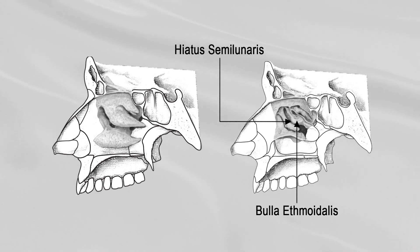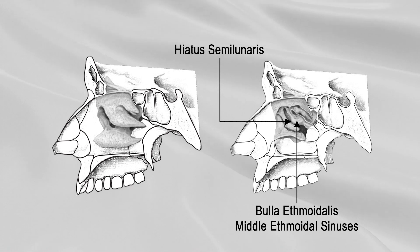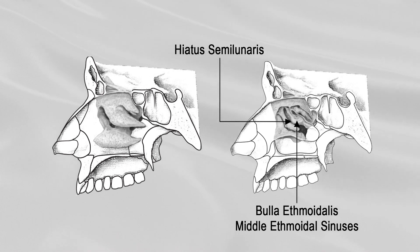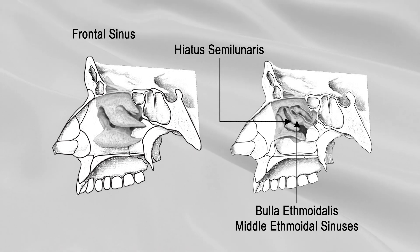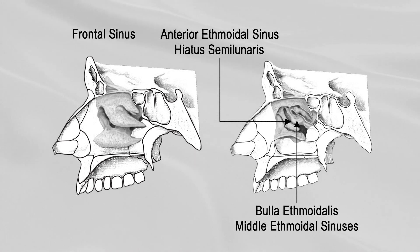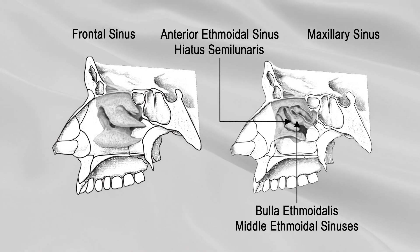The bulla ethmoidalis is produced by the underlying middle ethmoidal sinuses, which open at the upper margin of the bulla. The hiatus semilunaris receives openings from several sinuses. The opening of the frontal sinus is usually seen in the anterior part of the hiatus semilunaris. The opening of the anterior ethmoidal sinus is present behind the opening of the frontal sinus. The opening of the maxillary sinus is in the posterior part of the hiatus semilunaris.